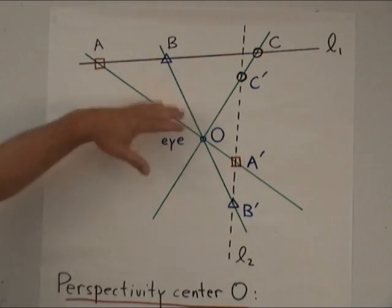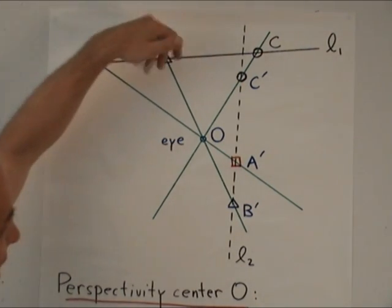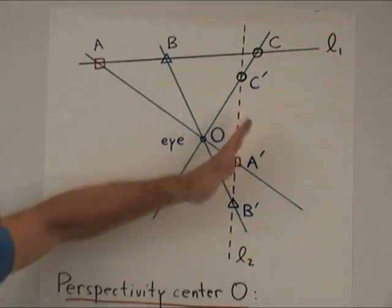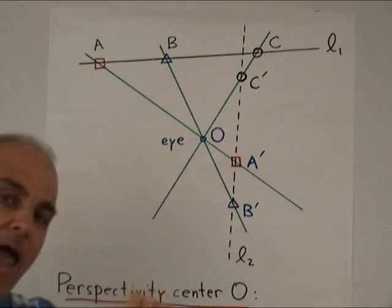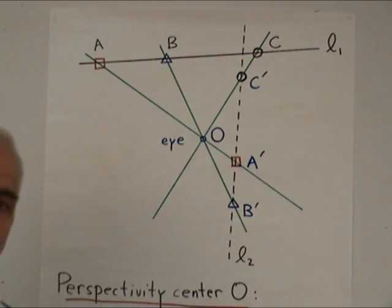Now in order to make that perspectivity one to one and onto it, in other words a bijection, we actually need to augment both lines by points at infinity. We'll talk about that a little bit later.